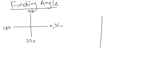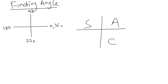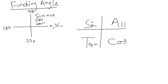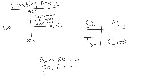In the first quadrant, all are positive. I always teach my students using the word CAST. C stands for cosine, A stands for all, S stands for sine, and T stands for tangent. In the first quadrant, sine, cosine, and tangent are all positive. If you don't believe me, type sin 80, cos 80, and tan 80 into your calculator — you'll get positive answers every time.